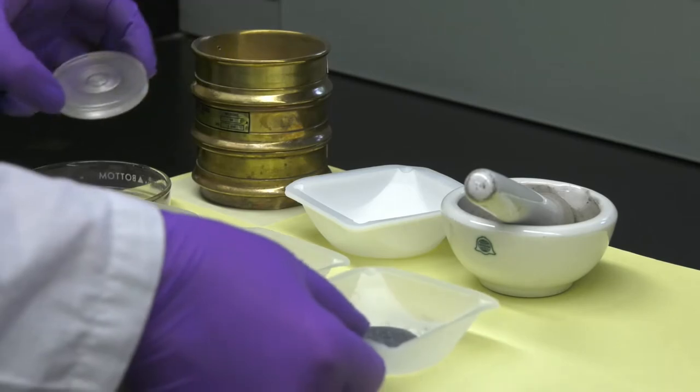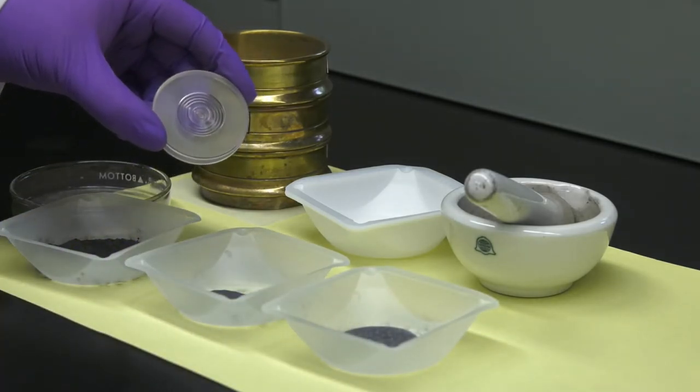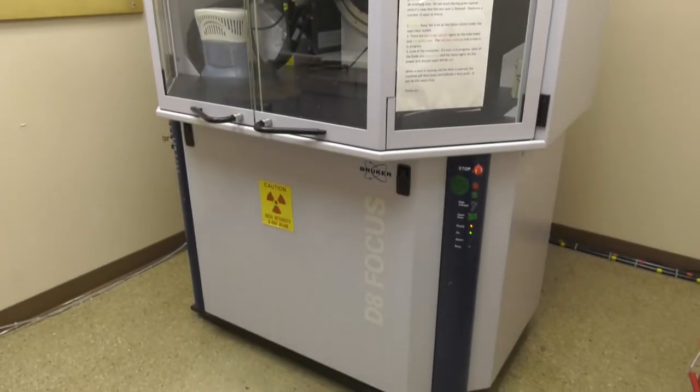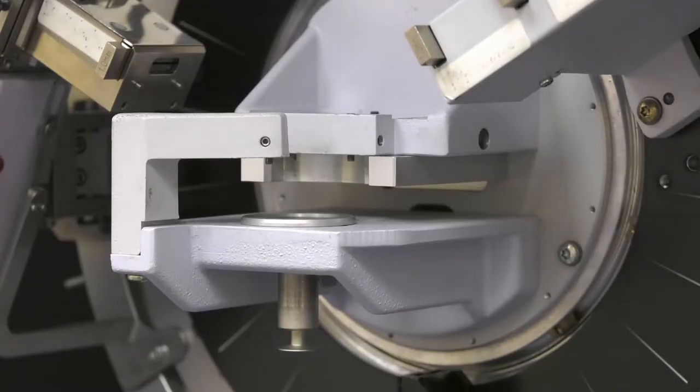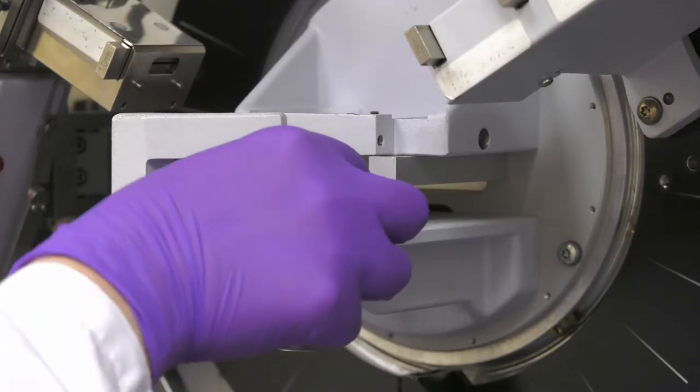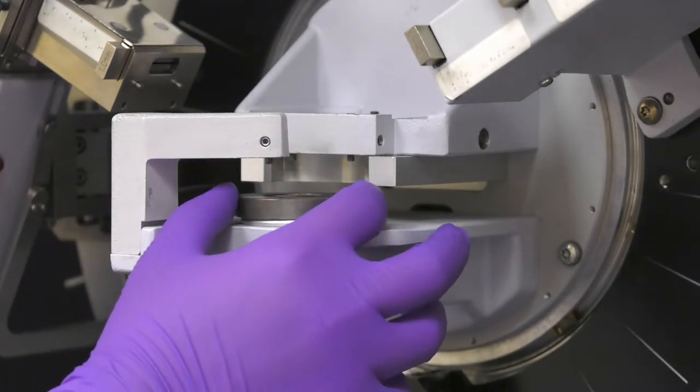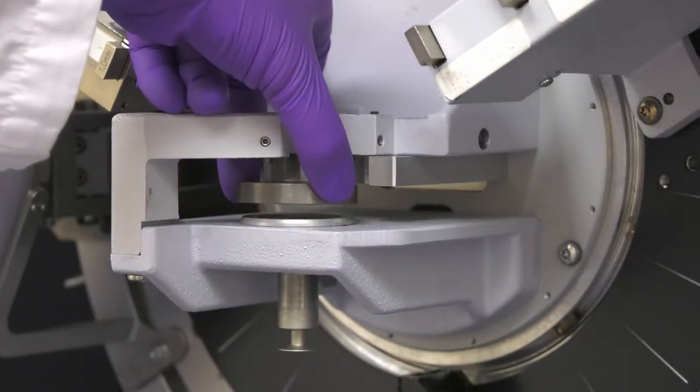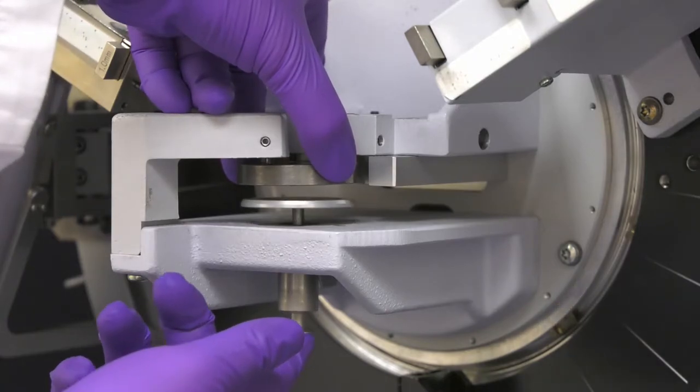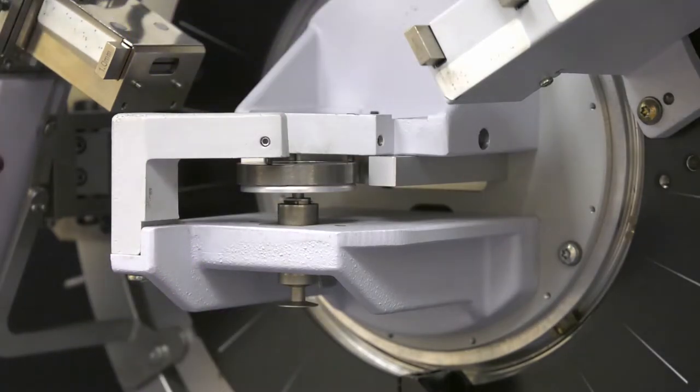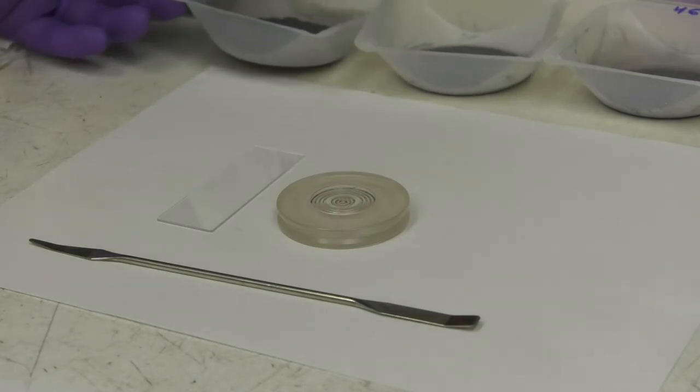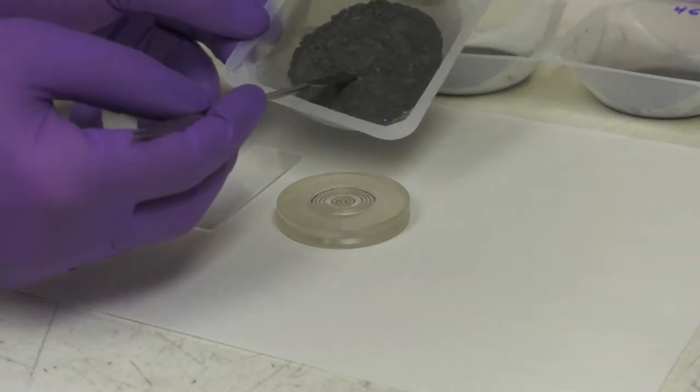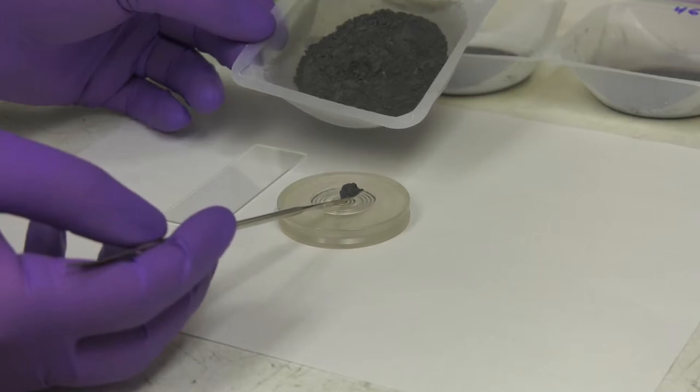These samples will be put into the sample holder for XRD. First, the single crystal sample is measured using XRD. Once the powder sample is measured, a powder sample is prepared in its holder. Powder is carefully placed in the middle of the sample holder and spread around.